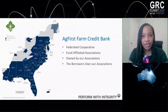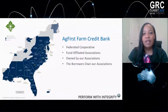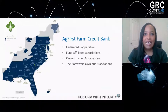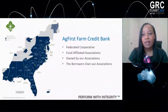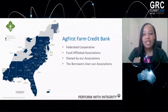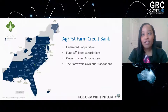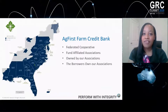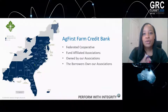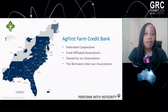It also includes Puerto Rico, and although we have a different service model, it's important to understand our setup because it gives you a better understanding as to why we are tackling third-party risk management the way that we are. AgFIRST operates as a federated cooperative and provides funding to all of our associations. Our associations, therefore, provide funding to the borrowers, so each of our 19 associations are our customers.